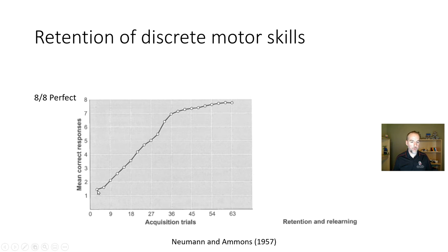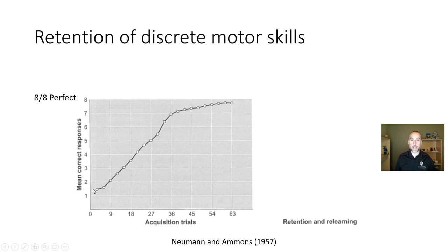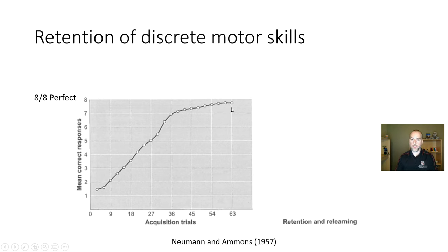At the very start, participants scored about one out of eight — exactly what you'd expect from guessing with eight options. With more and more trials, performance improved. On average, it took 63 trials for participants to get all eight correct twice in a row, which was the learning criterion.